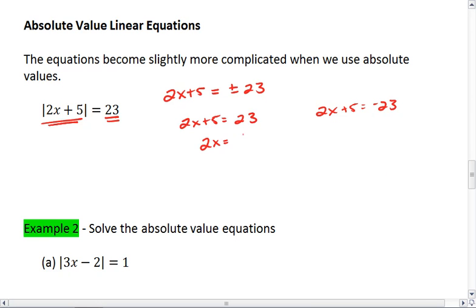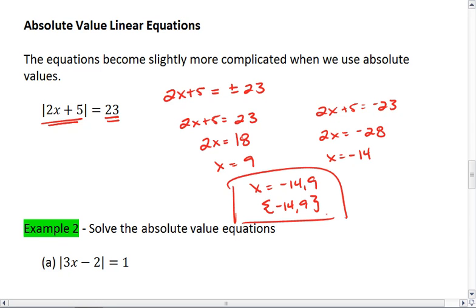We get 2x equals 18, or we get 2x equals negative 28. So we get x equals 9, or x equals negative 14. You can write this as x equals negative 14 or 9, or you can write it as a solution set negative 14, 9.